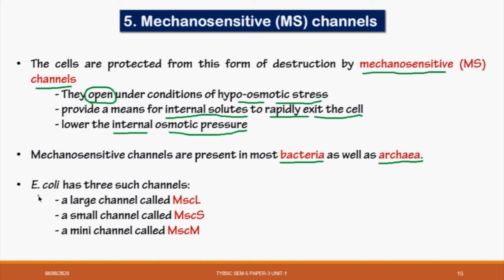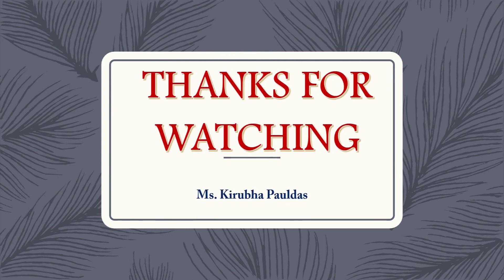In E. coli, there are three types of mechanosensitive channels. The first is MscL — Mechanosensitive Channel Large. The second is MscS — Mechanosensitive Channel Small. And the third is MscM — Mechanosensitive Channel Mini. These are the types of mechanosensitive channels present in E. coli.